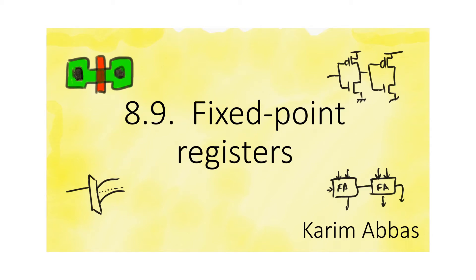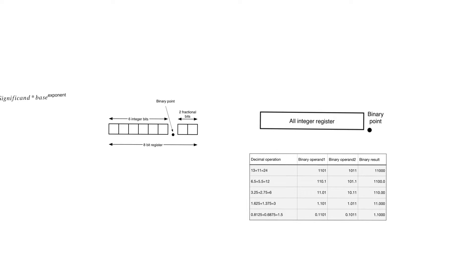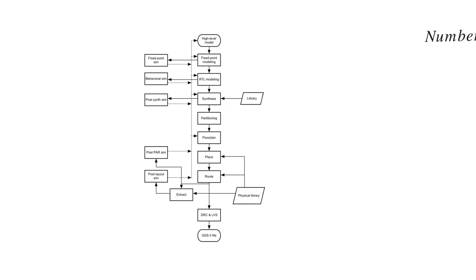One of the first steps in designing a hardware implementation is to transform it from a systems level simulation to a simulation that corresponds to the final hardware. If we take a look at the design flow, which we will be considering in detail in upcoming videos, it starts with a high level model. This high level model is usually performed by a systems engineer, by someone who is involved in the application we want to move into hardware.